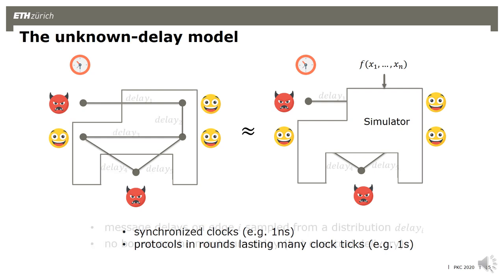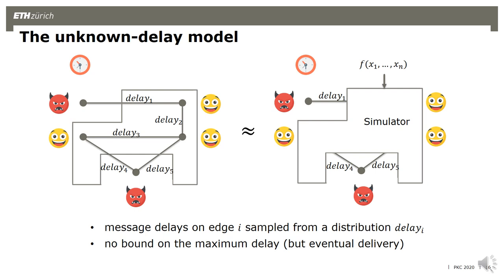Now that we have clocks, we can define how to deliver messages with random delays. This is done by enhancing the network functionality with delay distributions. Every edge in the graph has a label which is a delay distribution, and when a message is sent, the functionality samples a delay from this distribution and delivers the message after that many clock ticks. There is no upper bound on the delay — the delays are completely arbitrary and are inputted by the environment at the beginning of the execution together with the communication graph. We do not consider infinite delays, so a message will be delivered eventually — we have channels with eventual delivery.